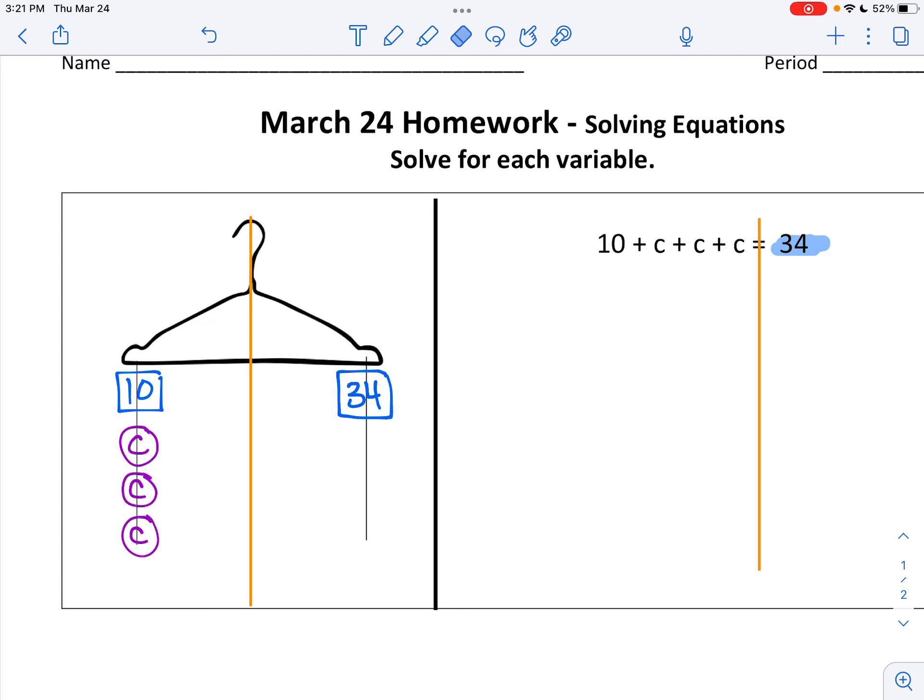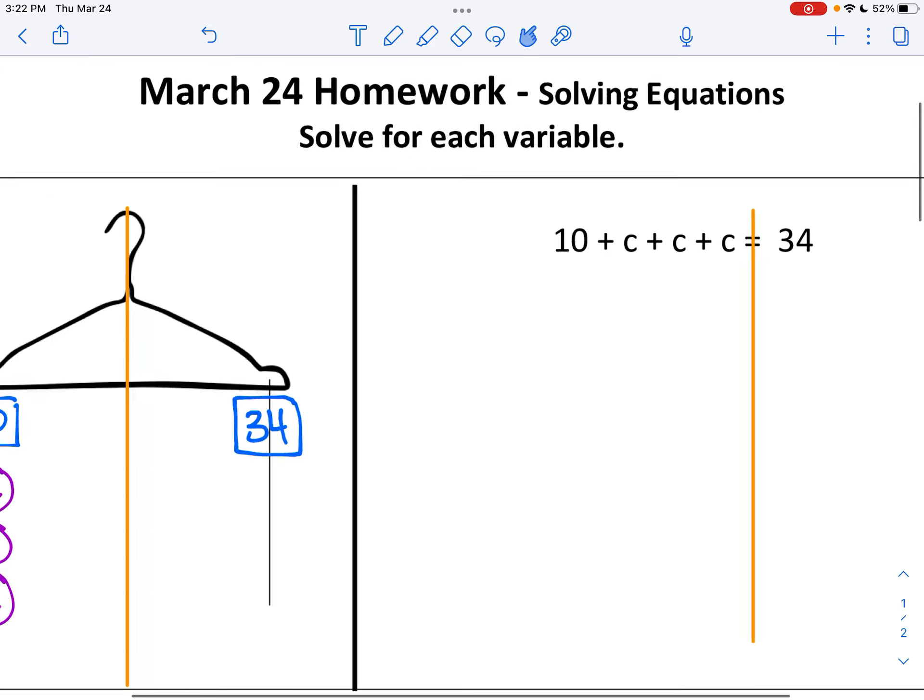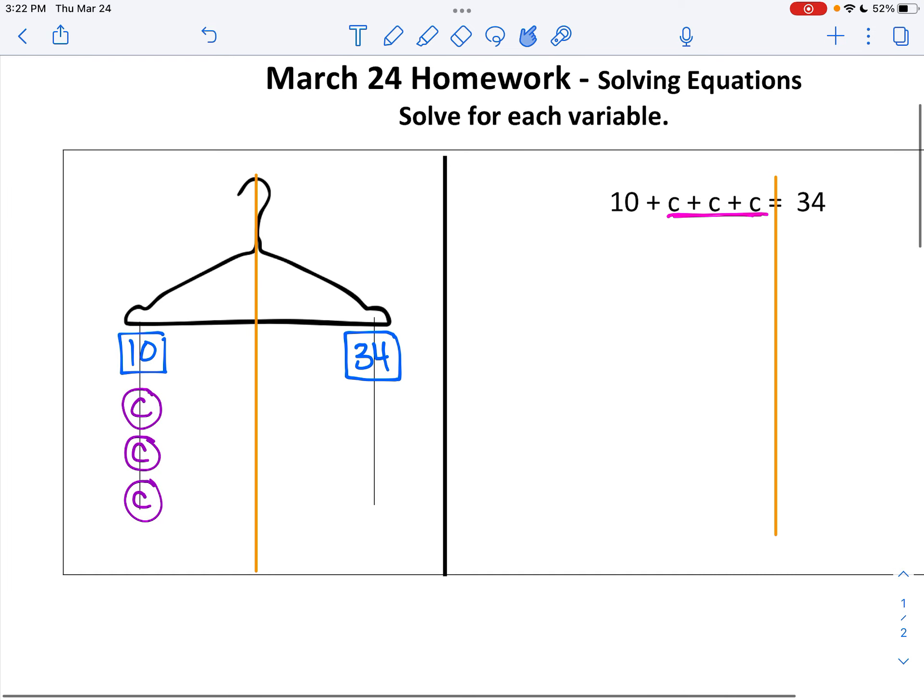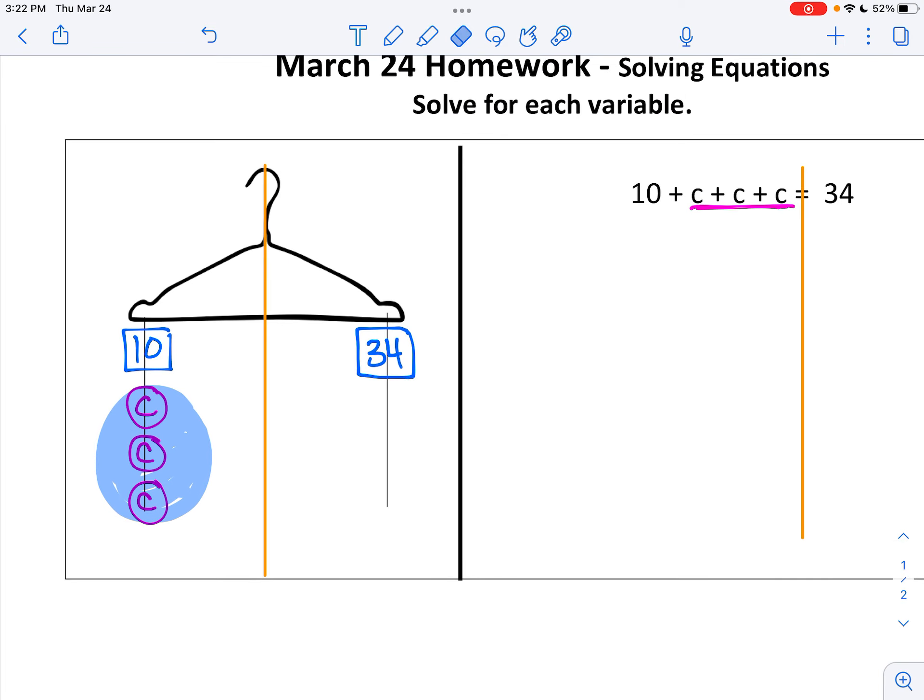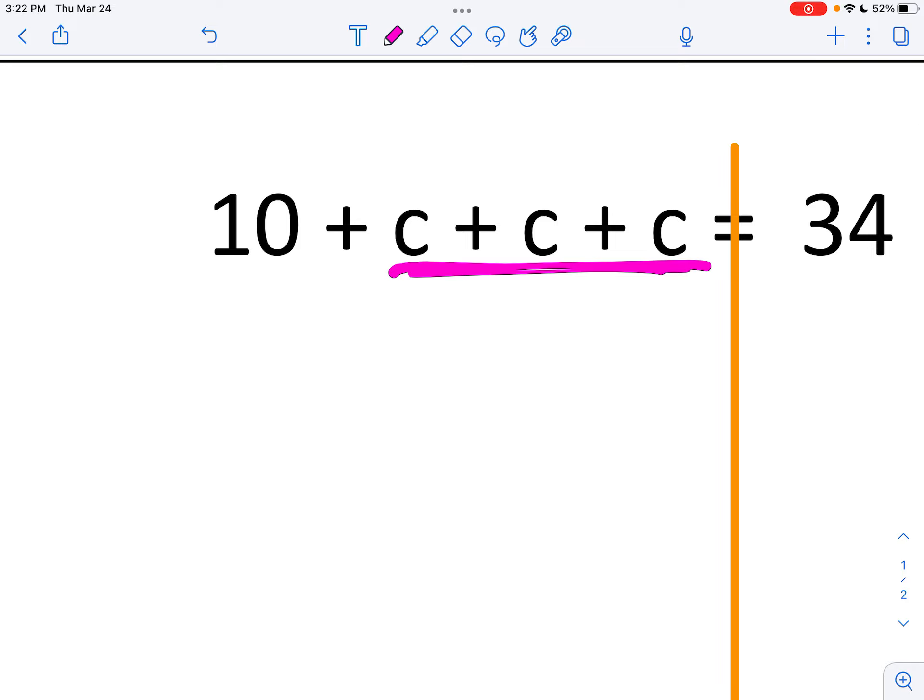Step two is to combine like terms. So there's a whole bunch of C's over here. There's a whole bunch of C's on my hanger. How many C's are on my hanger? There's one, two, three. So when I combine like terms, instead of spreading them out like that, I can just rewrite it as three with a C, three C.